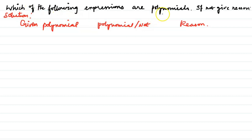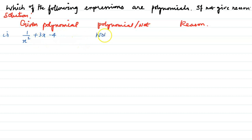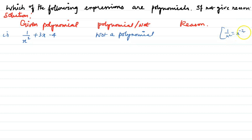Welcome to Simple Math. First question: 1/(x² + 3x - 4). So 1/x² is not a polynomial because 1/x² has a negative integral power — 1/x² is equal to x to the power of negative 2.